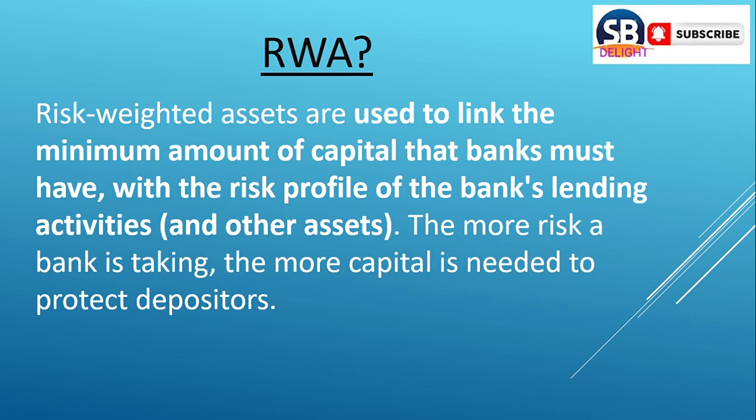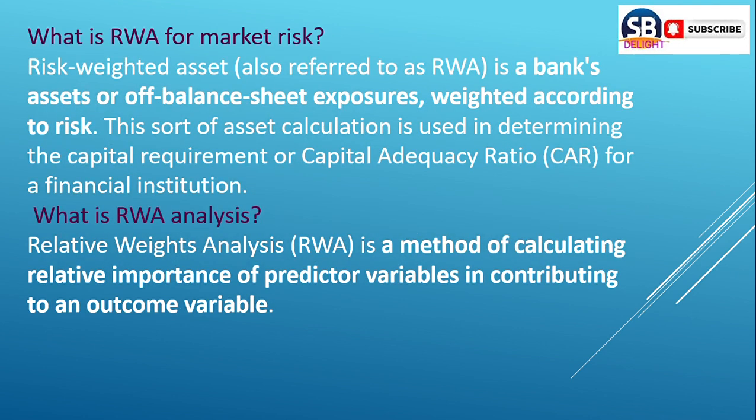The more risk a bank is taking, the more capital is needed to protect depositors. Risk Weighted Asset, also referred to as RWA, is a bank's assets or other balance sheet exposures weighted according to risk. This sort of asset calculation is used in determining the capital requirement or capital adequacy ratio for a financial institution.